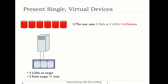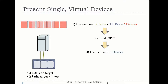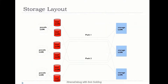MPIO presents single virtual devices. Without MPIO, you'll see two paths times three LUNs — you'll get six devices. You have three LUNs on the target and two paths going to the host; when enumerated, the system will see six devices. When you install MPIO, three devices will be presented to the system, because MPIO and a DSM recognize that there are multiple paths to the same device and present only one path to the system.